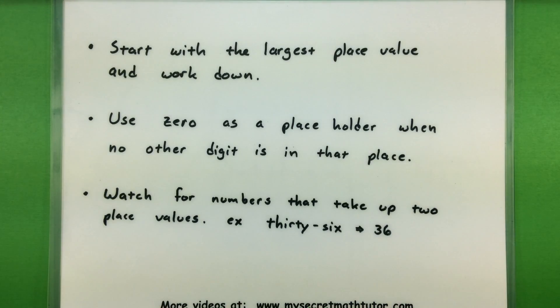And of course, watch out for numbers that actually take up two place values, something like maybe the number 36, where instead of identifying three in the tens place and six in the ones place, 36 really takes up two place values, even though it looks like just a single number. Let's go ahead and give this process a try and you'll see exactly what I'm talking about.